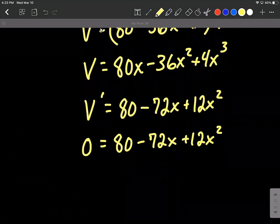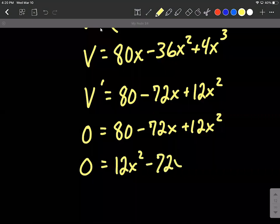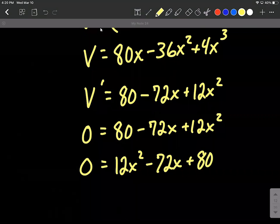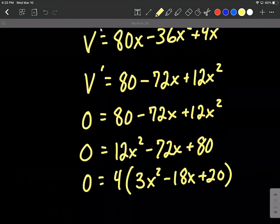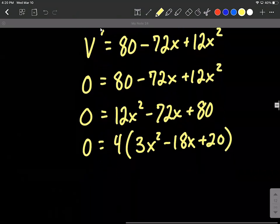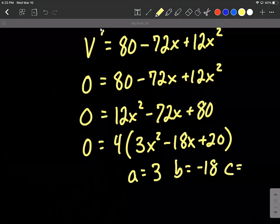So 0 equals 80 minus 72x plus 12x squared. This is a quadratic equation. I'm going to rearrange it so it looks like a quadratic equation with our x squared term first. In this case, I think we have a common factor of 4 between all three of these terms. So let's remove that and at least we'll have smaller numbers to deal with. So we have 3x squared minus 18x plus 20. And then we would want to maybe think about, can we factor any more? But I don't think we can on this one. So instead, I'm going to use the quadratic formula using a, b, and c. b is negative 18 and c is positive 20.